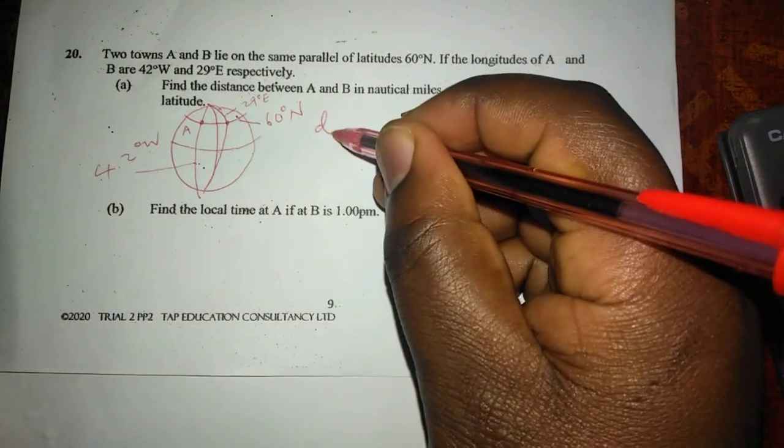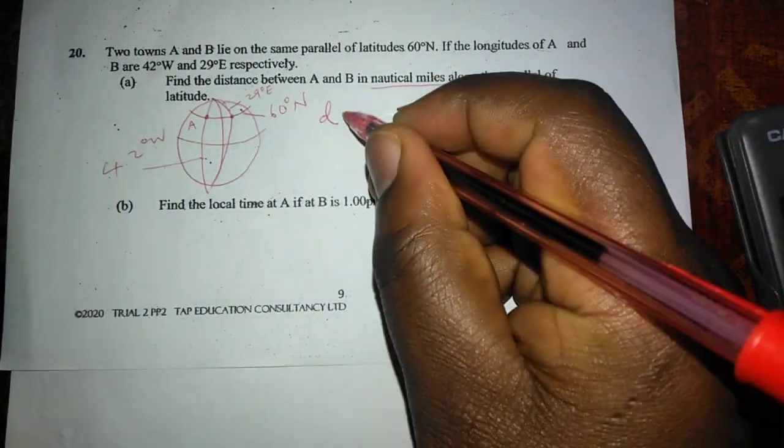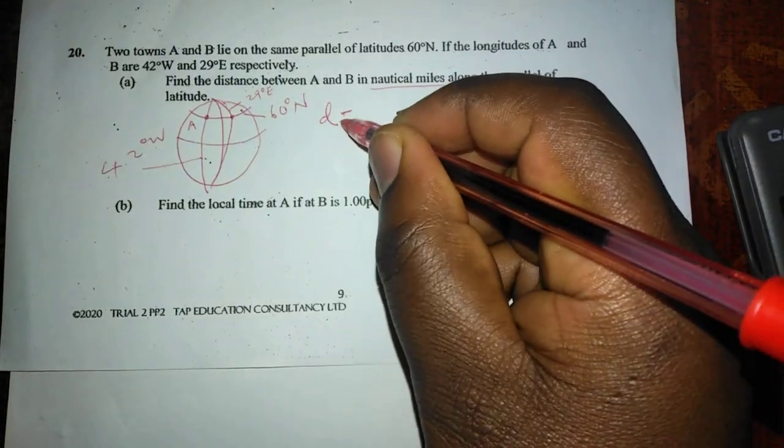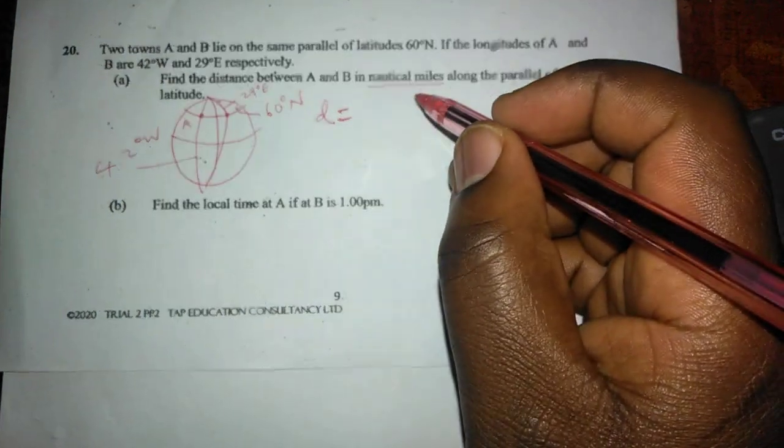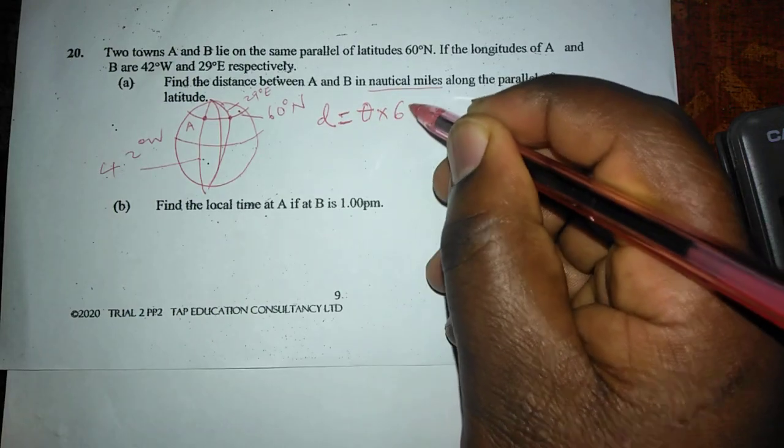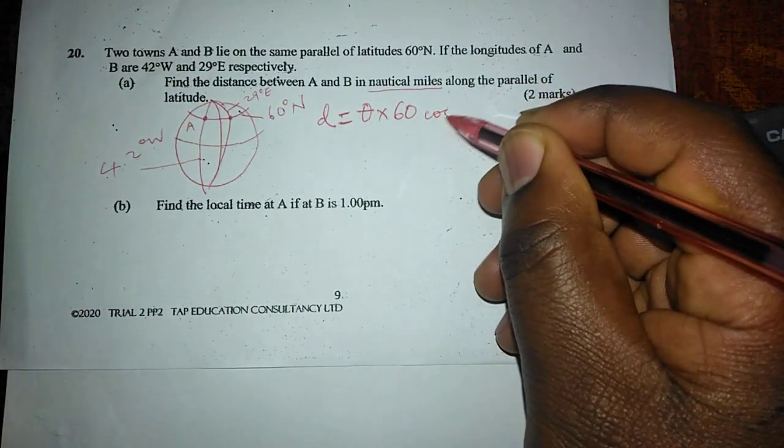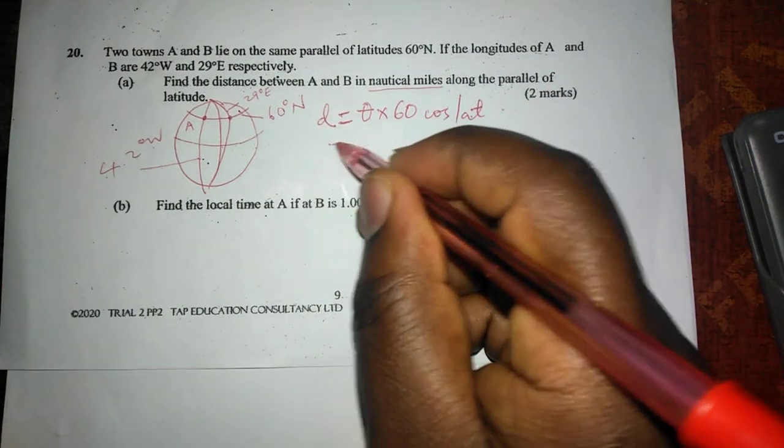To get distance in nautical miles, then we usually say that distance along a parallel latitude or a small circle in nautical miles is given by theta times 60 cosine of the latitude where the two places align.